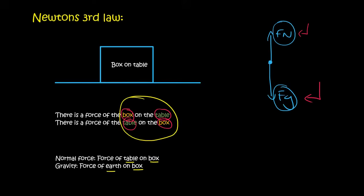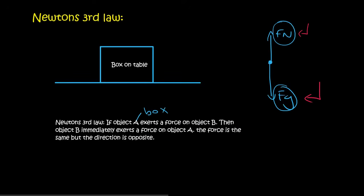Newton's third law says: if object A, such as a box, exerts a force on object B, such as a table, then object B immediately exerts a force on object A. The force is the same magnitude, but the direction is opposite. So the box exerts a force on the table, and the table exerts a force on the box. They would both be 5 Newtons, for example. Newton's third law is about objects acting on each other with the same force but opposite direction.